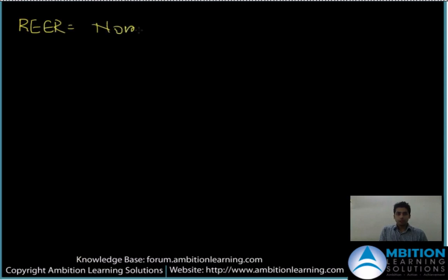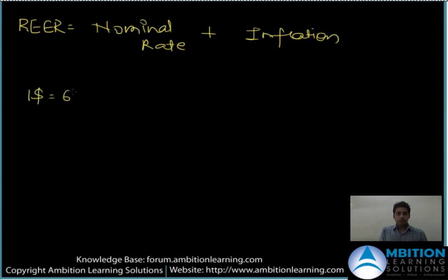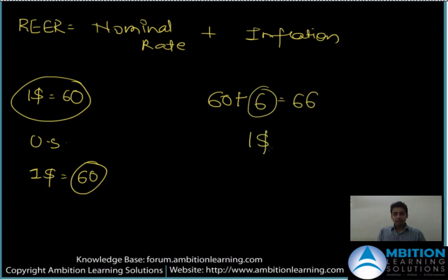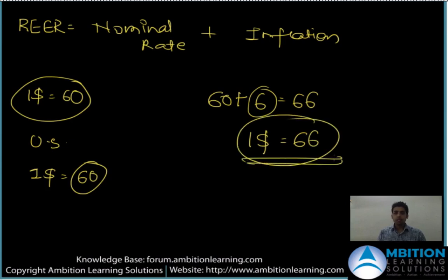Because the same product in the US is available for 60 rupees equivalent, but in India it is available for 66 rupees, we call 1 dollar equal to 66 rupees the real effective exchange rate. In definition: real effective exchange rate is nothing but nominal rate plus inflation. Someone paid 1 dollar — effectively 60 rupees — for the sandwich in the US, but in India he pays 66 rupees. Hence the real effective exchange rate is 1 dollar equal to 66 rupees.